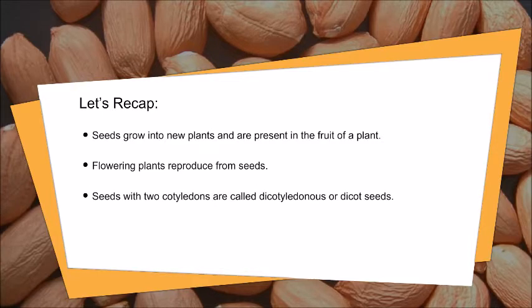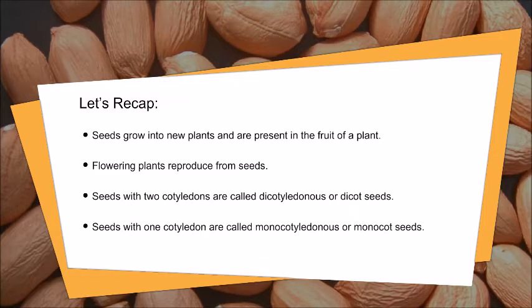Seeds with two cotyledons are called dicotyledonous, or dicot seeds. Seeds with one cotyledon are called monocotyledonous, or monocot seeds.